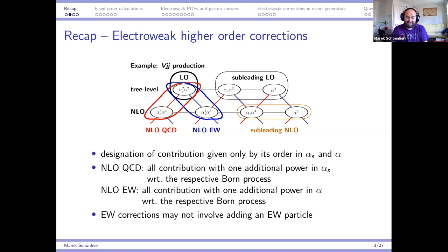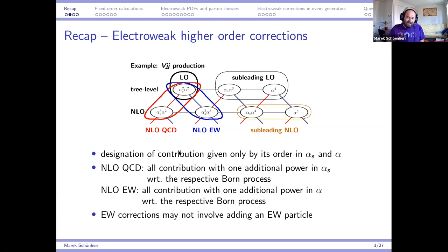The second major point from yesterday: higher order electroweak corrections are not determined by adding a certain class of particles or loops, but rather by calculating all contributions that contribute to a given signature — meaning a specific combination of final state particles — and by the order in the expansion in alpha_s and alpha.